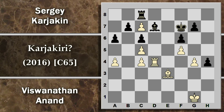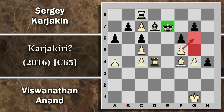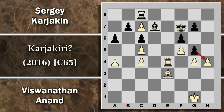Ad esempio torre D4 per attaccare l'alfiere: se si difende con il re, c'è comunque alfiere F4. Il problema è che non c'è il contro gioco della spinta in G5 perché il bianco può catturare en passant e il re non difende più il pedone. Karjakin gioca G6 per togliersi i problemi dovuti ai pedoni bianchi che stanno avanzando sull'ala di donna. Questa manovra però permette prima di giocare torre D4, nuova minaccia sull'alfiere.